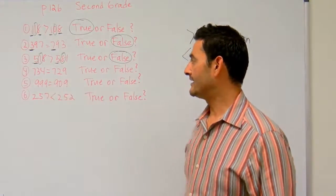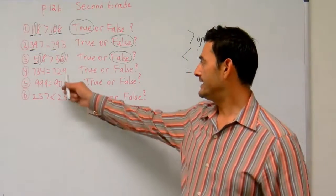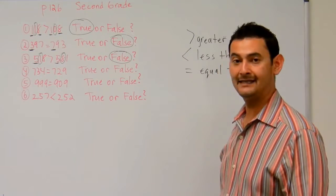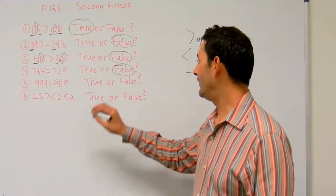Let's take a look at number four. Here we have 734 equals 729. Is that the same number? Absolutely not. So that's going to be false.